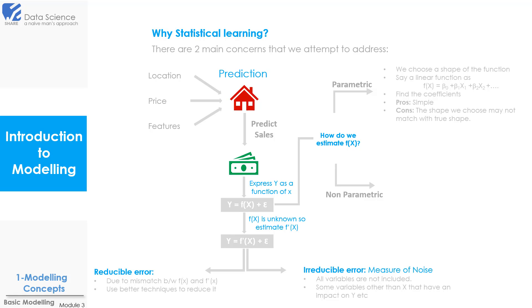In the parametric approach, we choose a shape of the function. Say we choose a linear function as f(x). So we can write f(x) = β₀, which is the intercept, plus β₁x₁ plus β₂x₂ and so on. Once we find the coefficients, our model will be ready. We can substitute any value of x and predict our sales. So here we assume that the relationship between y and x is linear, based on which we find the coefficients. The pros of this approach is that it is simple — you just have to find the coefficients and your model is ready. But there are certain drawbacks as well, such as the shape we choose, like linear, may not match the true shape. Maybe the true shape is not linear at all, so in that case our results will be unreliable.